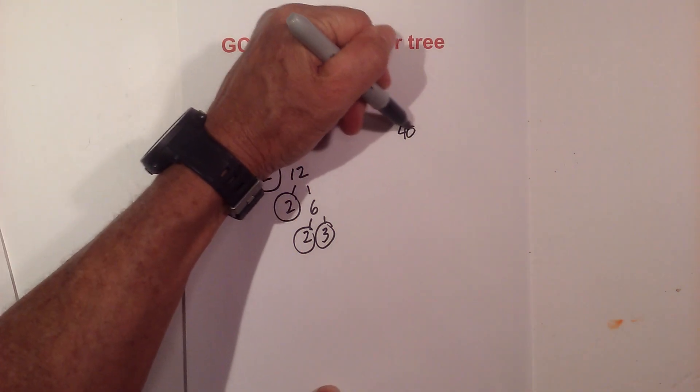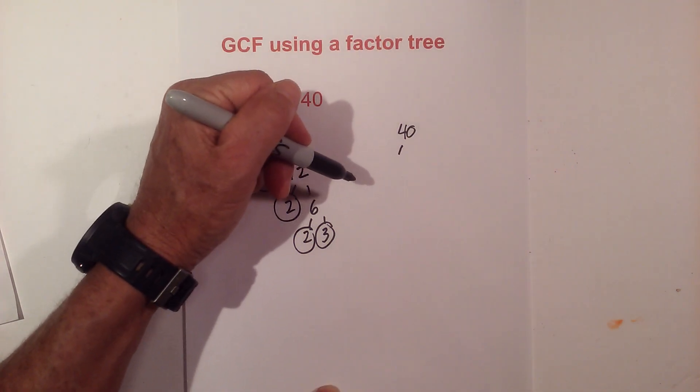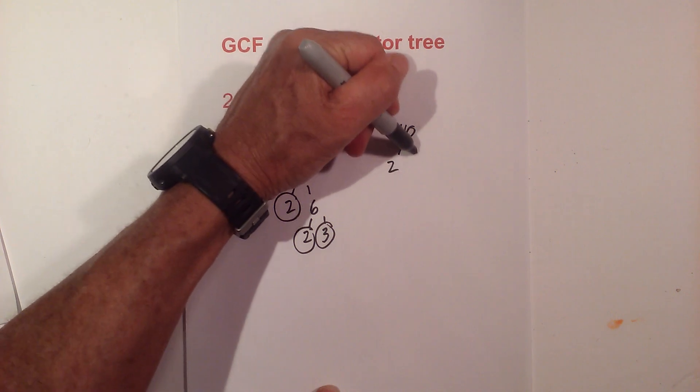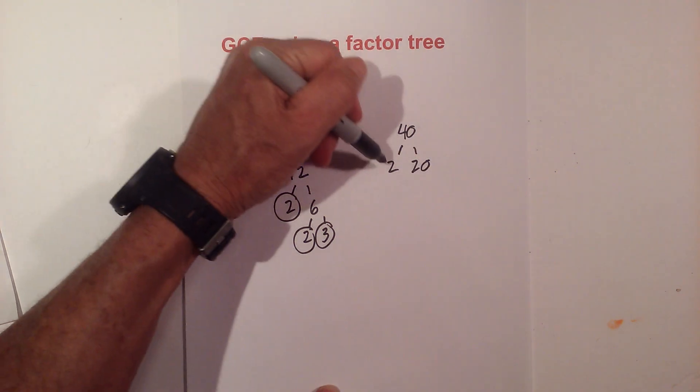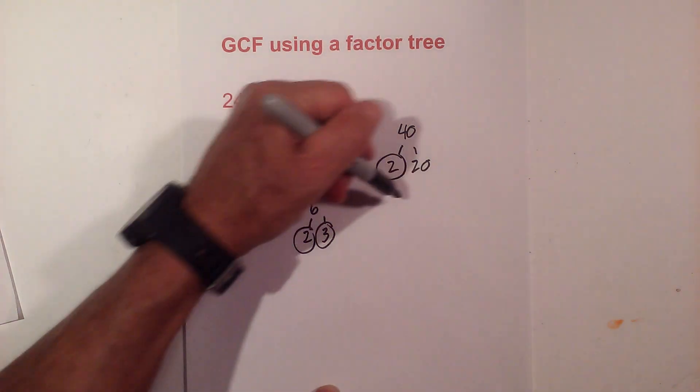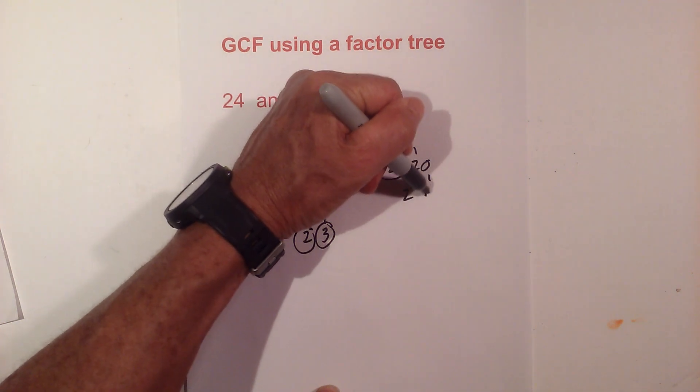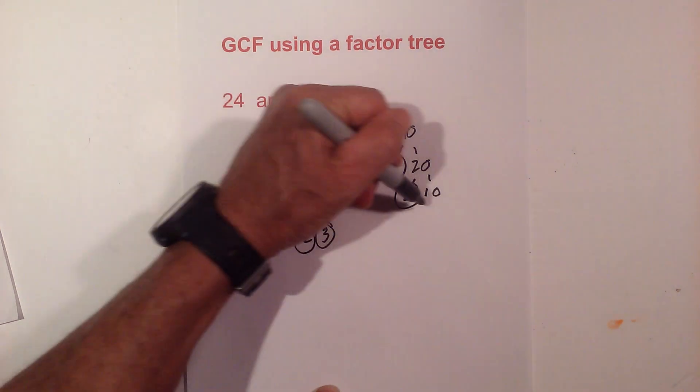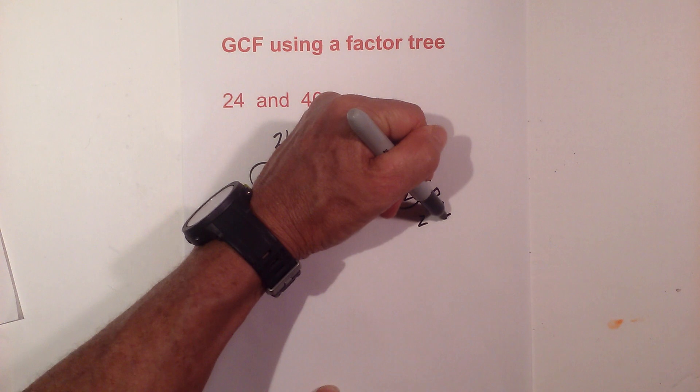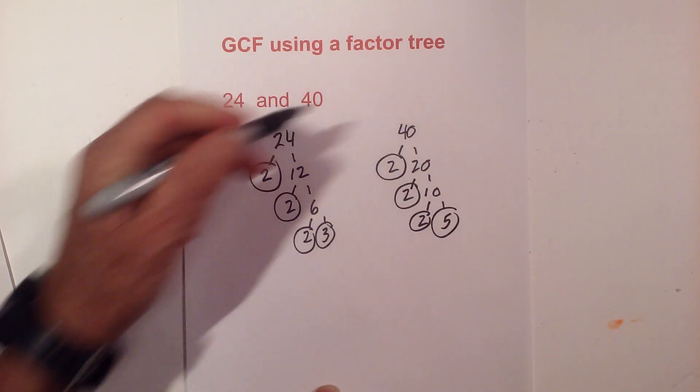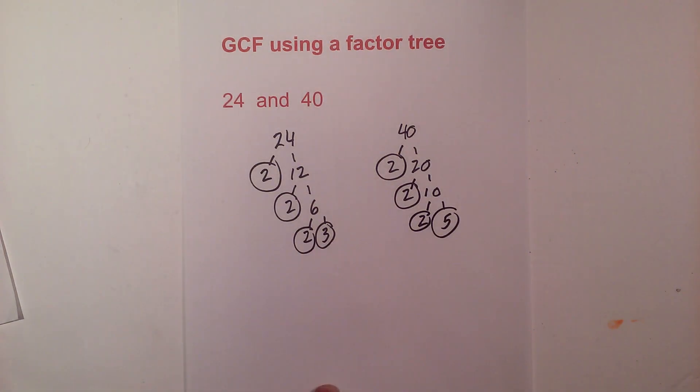Now we have 40, so let's begin. Let's just go 2 times 20—we'll eventually get there. Circle the 2 because it is prime. And then 2 times 10 equals 20—circle the 2. And then 2 times 5—circle both of them because they're prime and now we're down to prime numbers.